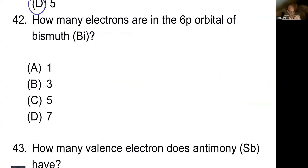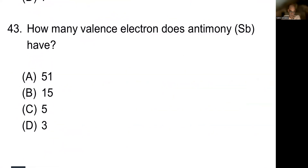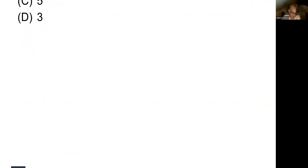How many electrons are in the 6P orbital of bismuth? The answer should be B — three electrons for bismuth. For antimony's valence electrons, take a look at antimony on the periodic table and figure it out.